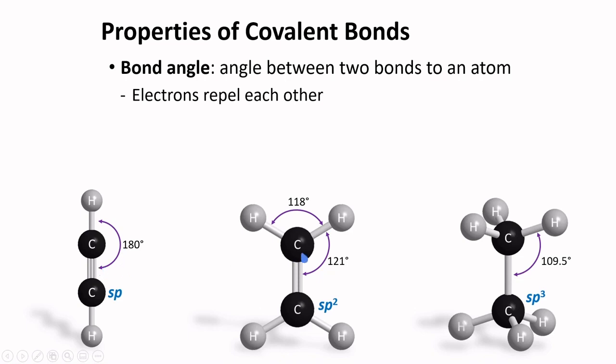For an SP2 hybridized carbon, the bond angles are about 120 degrees. For an SP3 hybridized carbon, the bond angle is around 109.5 degrees to accommodate all the four electron groups around the central atom.